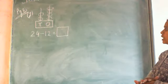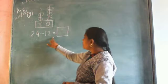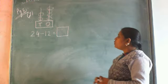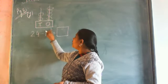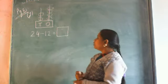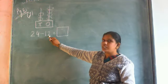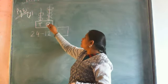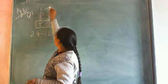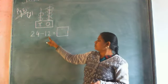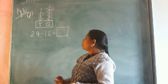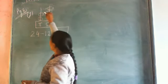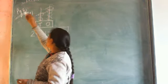Now the next step is to subtract. The number we have to subtract is 12. We cross the number of beads according to the given number. First identify the digit at ones place — the digit at ones place of 12 is 2 — so cross 2 beads on the abacus at ones place. Now the digit at tens place of 12 is 1, so cancel 1 bead at tens place.